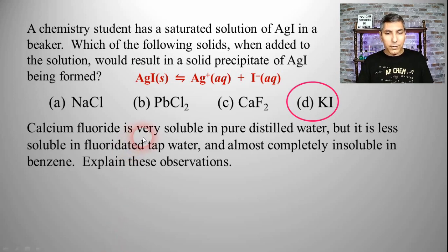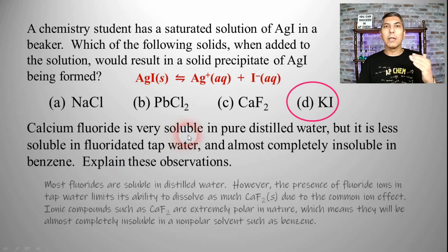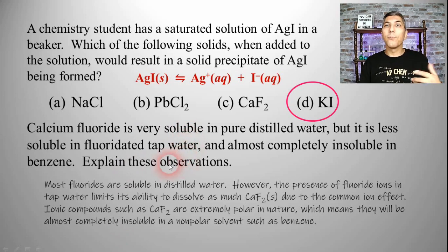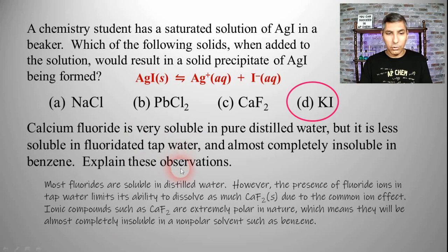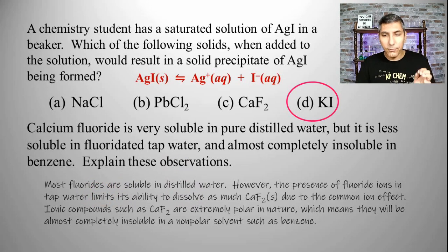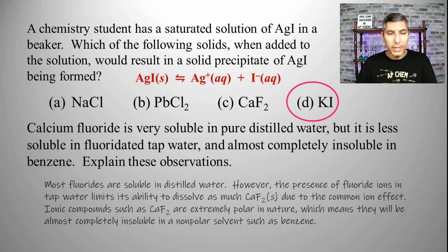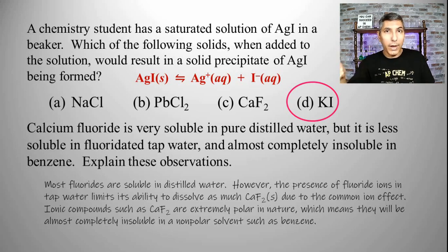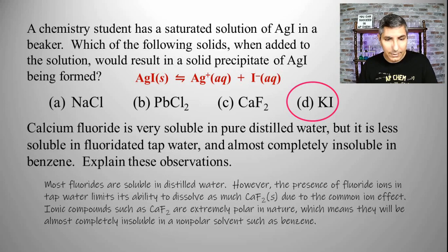We know that the solubility is going to be less whenever there's fluoride ion already in the distilled water dissolved. A lot of fluorides are soluble in distilled water. However, the fact that there's fluoride ions in tap water limits its ability to dissolve as much calcium fluoride due to that common ion effect. It's almost like there is a capacity for fluoride ions to be dissolved in that water, and the fluoride is already taking up some of that capacity.